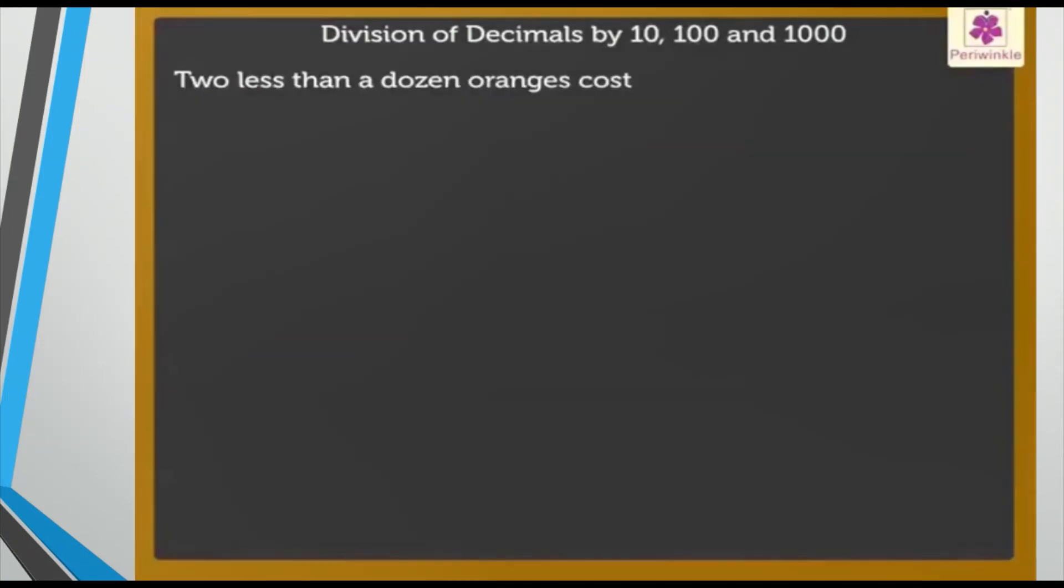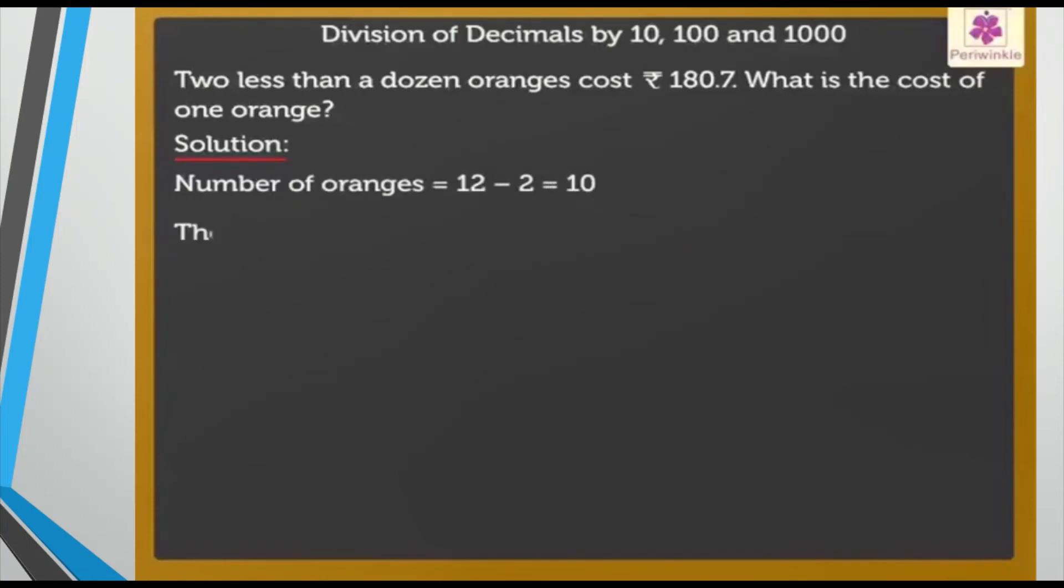Two less than a dozen oranges cost ₹180.7. What is the cost of one orange? Number of oranges: in a dozen you have twelve, and two less than that means ten. So ten oranges cost ₹180.7.